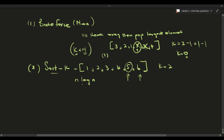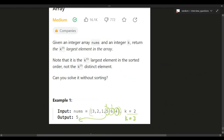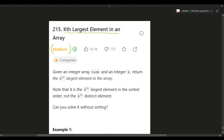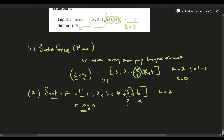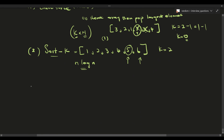The time complexity of sorting is O(n log n), so this solution might not be accepted in an interview for a medium problem — they're going to need a better complexity. One can say: maybe we can use a heap. The idea with the heap algorithm is that we can reduce the time complexity to O(k log n), because a heap is more like a tree data structure.